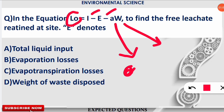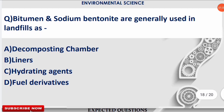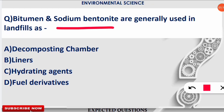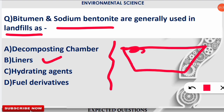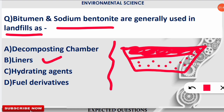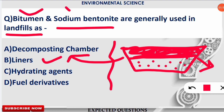The next question: 'Bitumen and sodium bentonite are generally used in landfills as which of the following?' The correct option is option B: liners. These are used as liners in landfills — for example, when waste is filled in a landfill, it should not contaminate the groundwater table beneath, and it should not leach into the surrounding soil causing soil or air pollution. Liners made of bitumen and sodium bentonite products act as a barrier to prevent this.